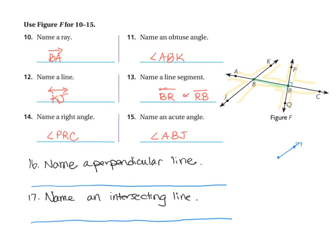I added a couple of questions to identify some types of lines. The first question is name a perpendicular line. A perpendicular line crosses another line and also forms four right angles. Here we have right angles at each corner, so this line and this line both make a perpendicular pair. The symbol for perpendicular is a little upside-down T. So: line AC is perpendicular to line PQ.